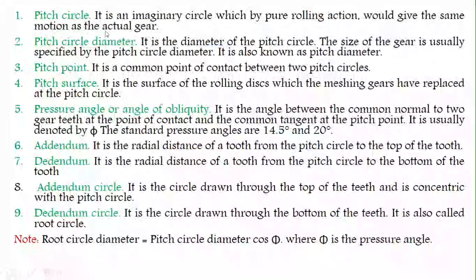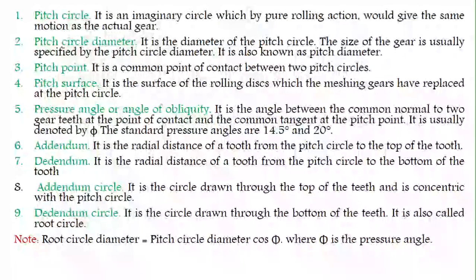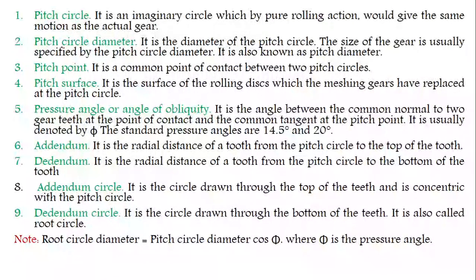The pitch circle is an imaginary circle which, by pure rolling action, gives the same motion as the actual gear. The pitch circle diameter is the diameter of the pitch circle. The size of the gear is usually specified by the pitch circle diameter only — it is also known as the pitch diameter.